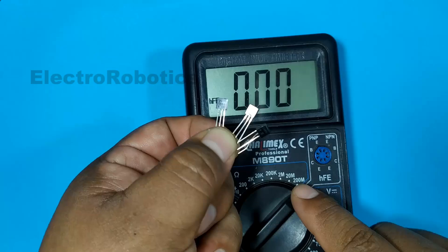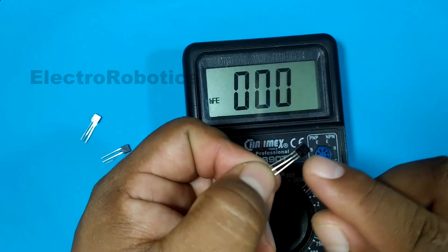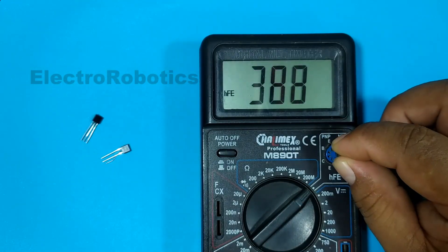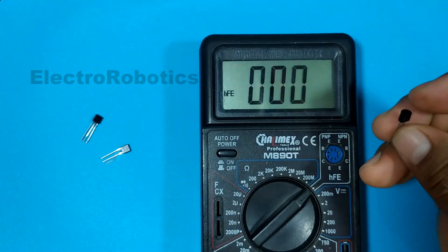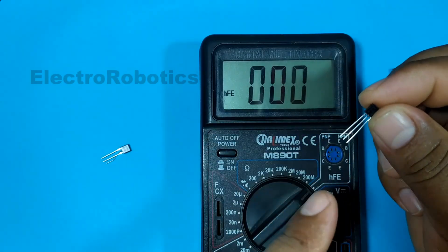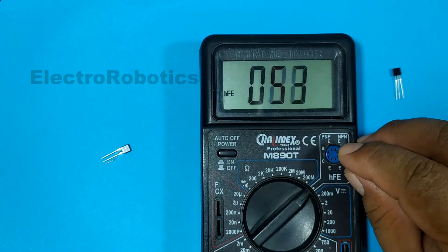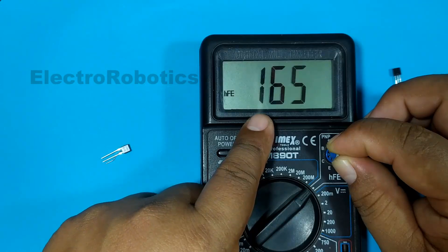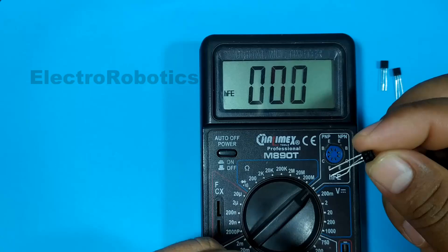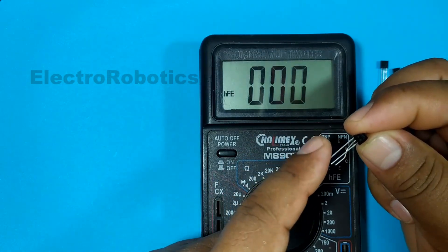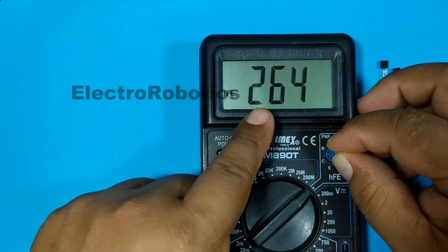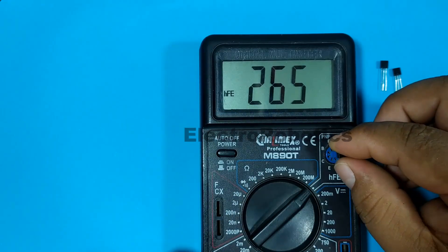Let's see the gain of the transistors. First, we are going to place the BC547. The emitter would be pin 3. We have the gain. We take it out. We test the 2N5551. The emitter in this case would be pin 1. And there we have a lower gain, but it's still a gain. Now the one with the highest amperage. In this case, it's more complicated. The emitter is pin 1 and the collector is pin 3. We have the gain.